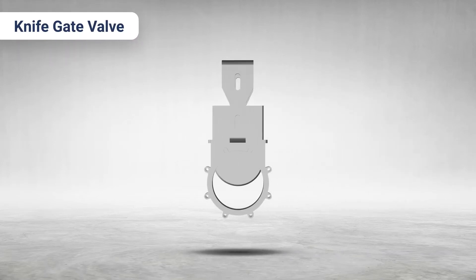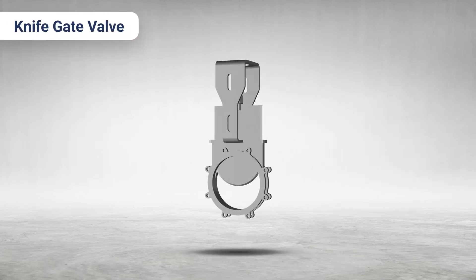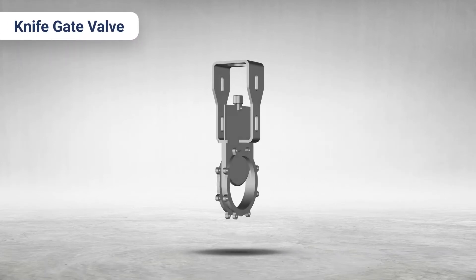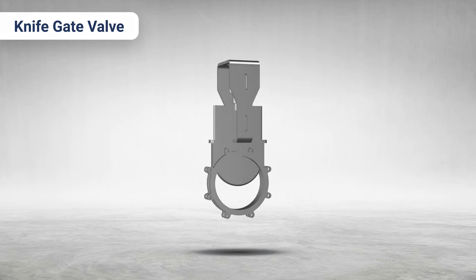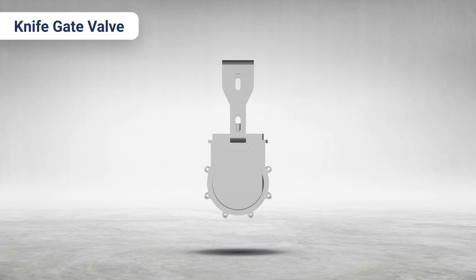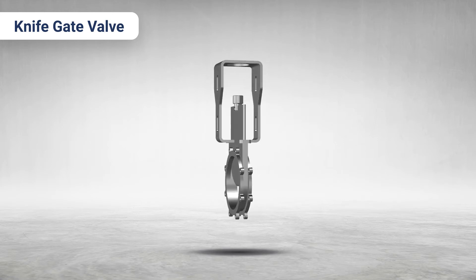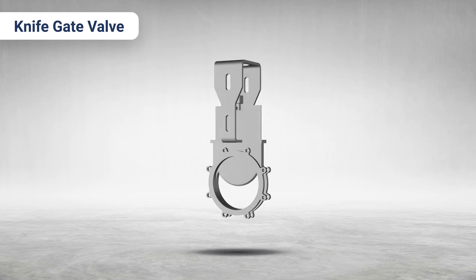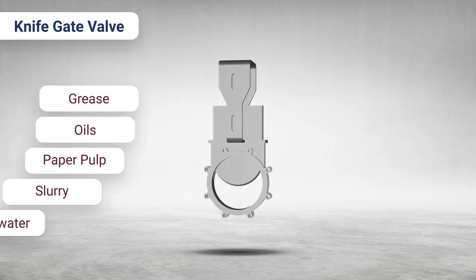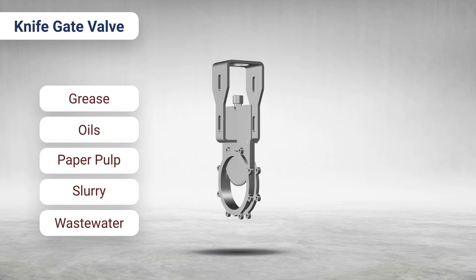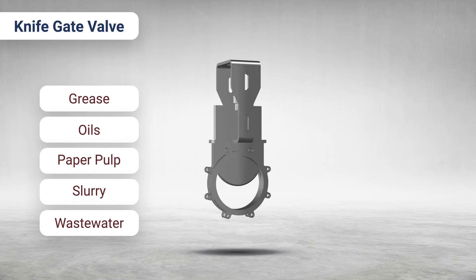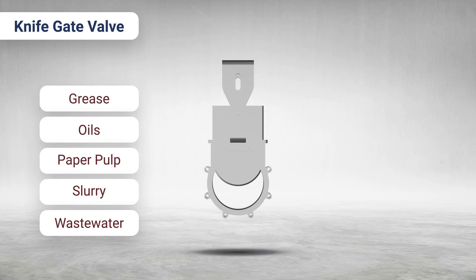Knife Gate Valve. Typically used for controlling flow of media containing solids, the knife gate valve features a thin gate controlled through linear action, which can cut through materials and create a seal. While not suited for high-pressure implementations, these valves are ideal for use with grease, oils, paper pulp, slurry, wastewater, and other media which might obstruct the operation of other valve types.